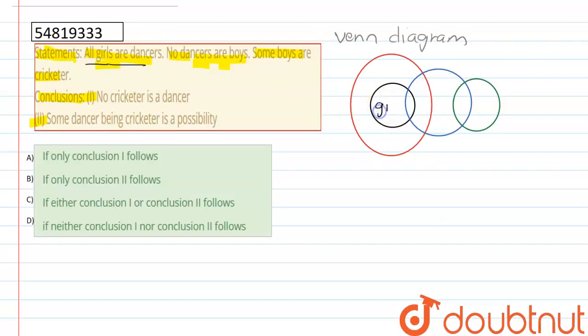All girls are dancers. No dancers are boys. This is boys. Some boys are cricketers. Some boys are cricketers. This is cricketers. This is Venn diagram.